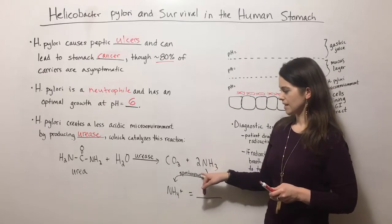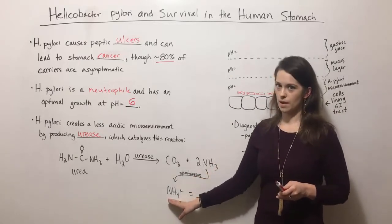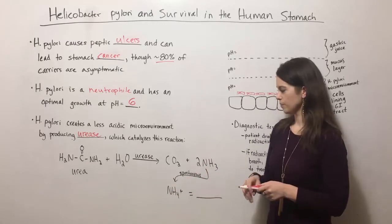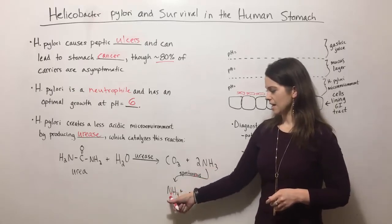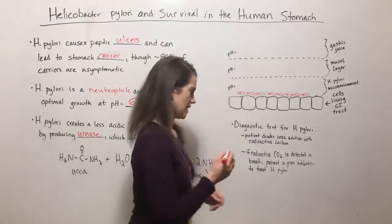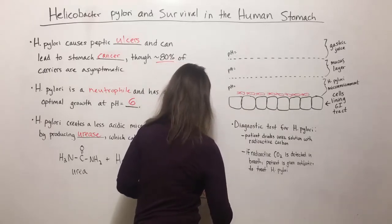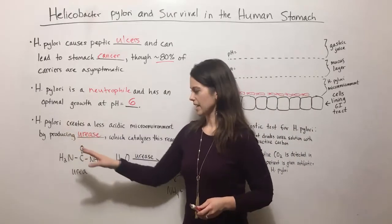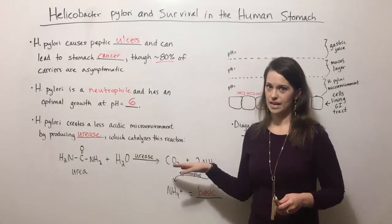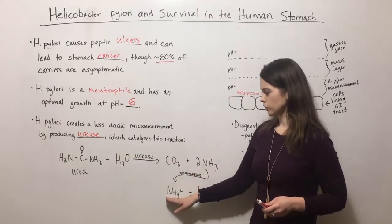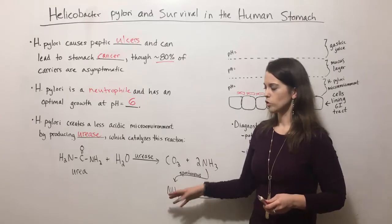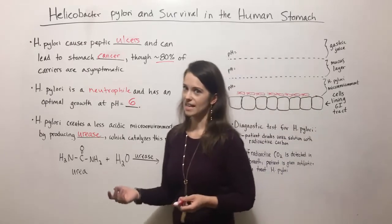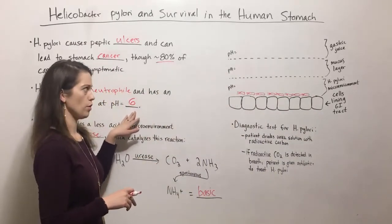The ammonia is then spontaneously converted to an ammonium ion because water present in the area will donate a hydrogen ion, and so that happens spontaneously. The ammonium ion is very basic. So by producing urease, H. pylori can produce large amounts of this ammonium ion, which raises the pH in the area immediately surrounding the cell, making it less acidic and closer to this optimum growth pH.